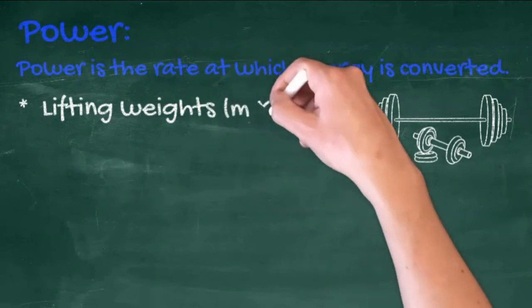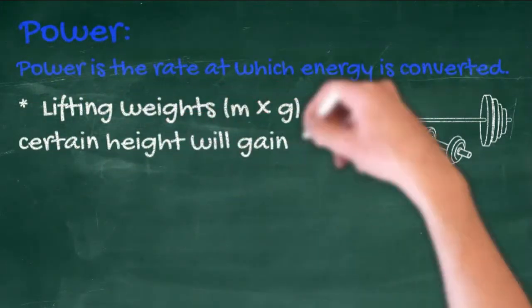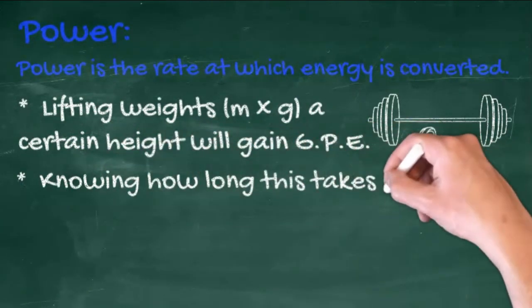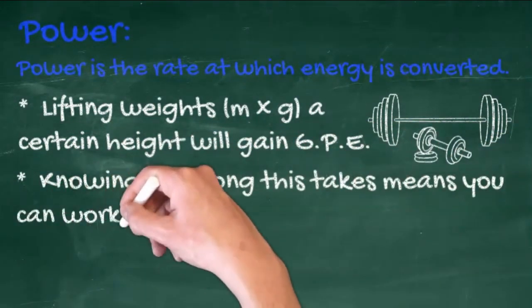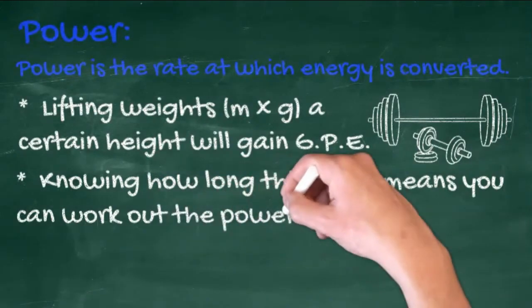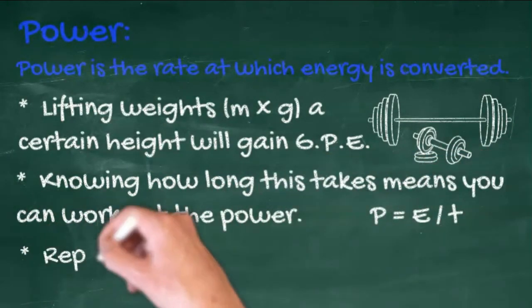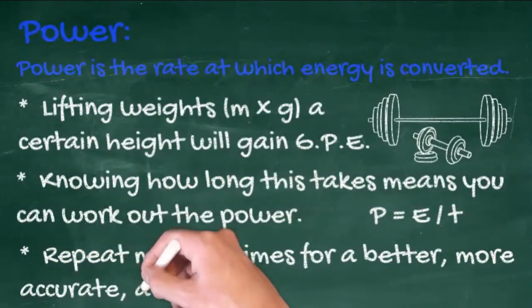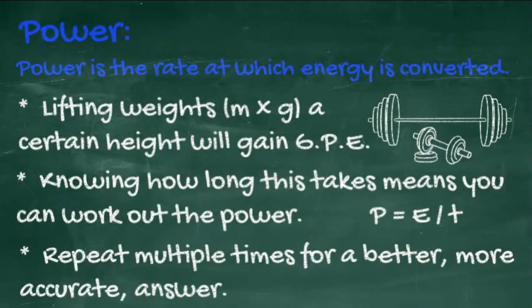If you lift some weights from the ground, weight equals mass times gravity, then there will be a gain in gravitational potential energy. Knowing how long this takes means you can work out the power, because power is energy over time. Do it multiple times, say lift the weights from the ground to a shelf ten times, and then divide by ten, and you'll get a more accurate answer.